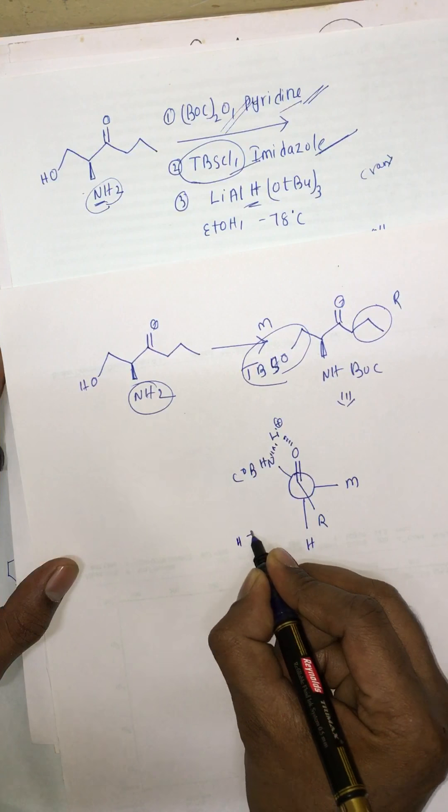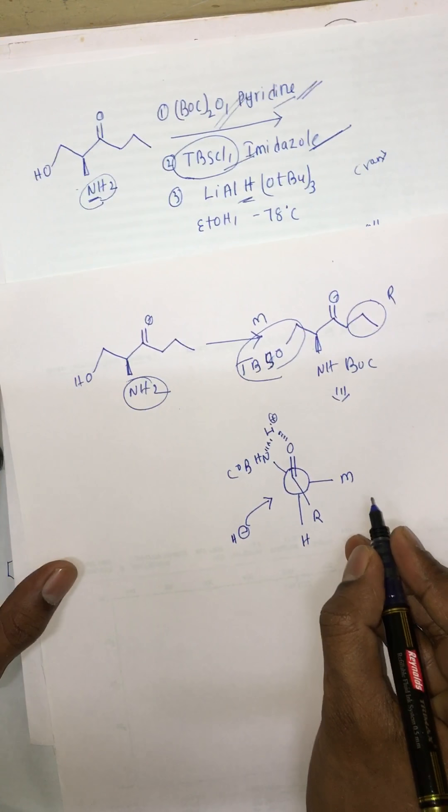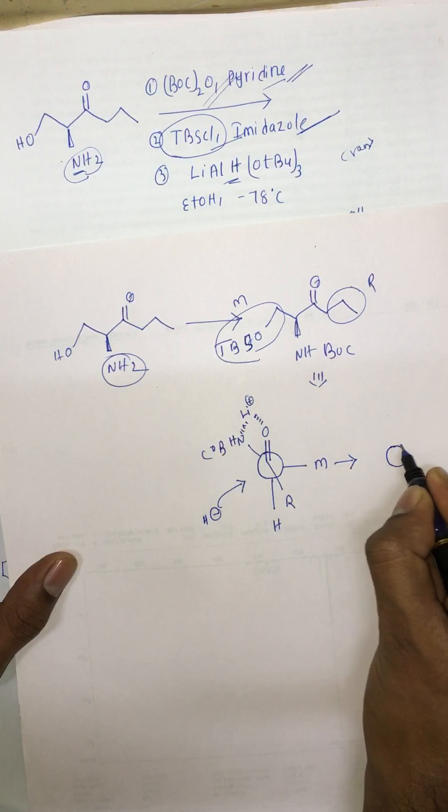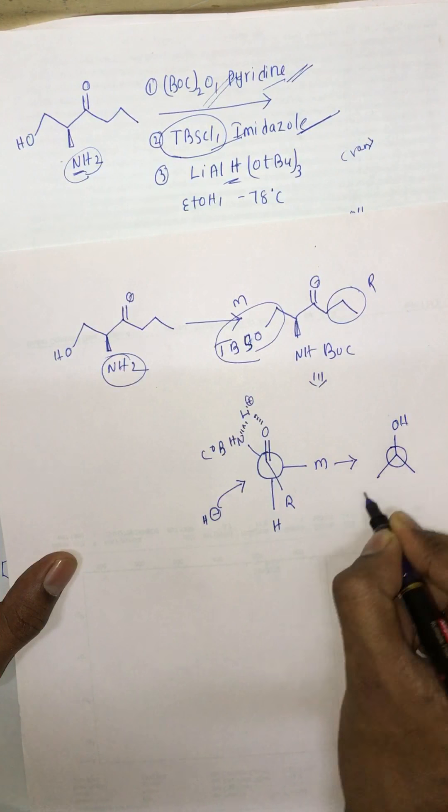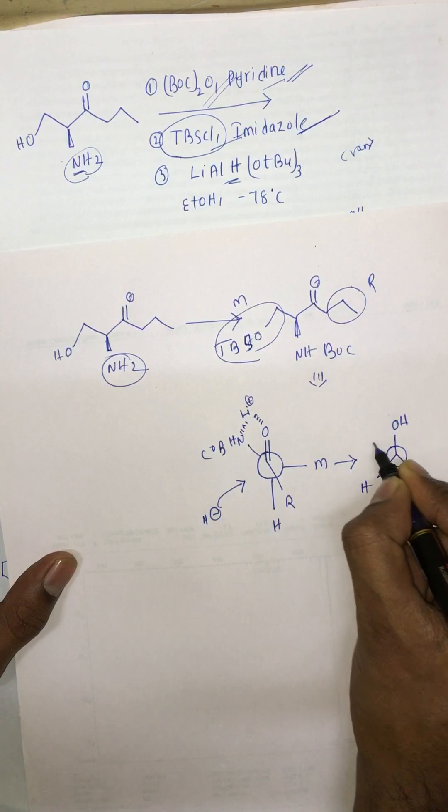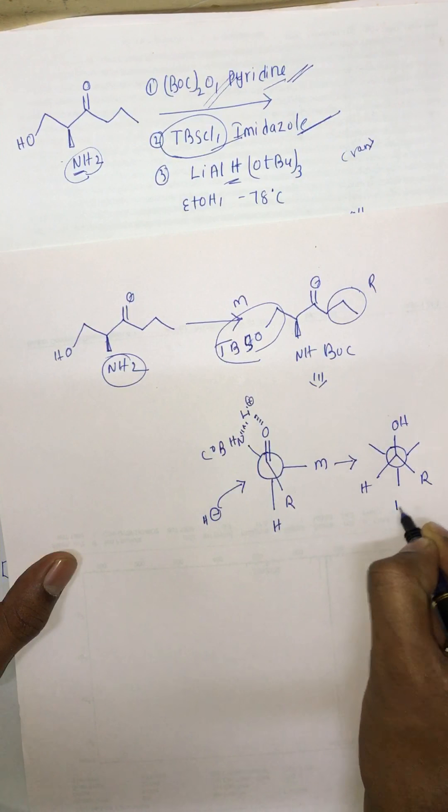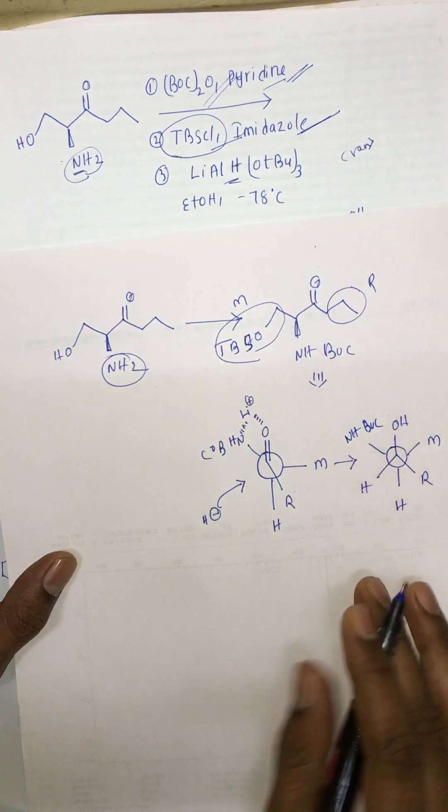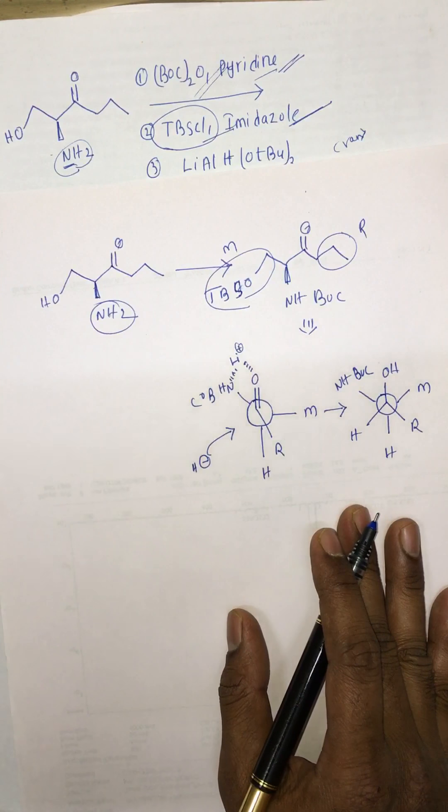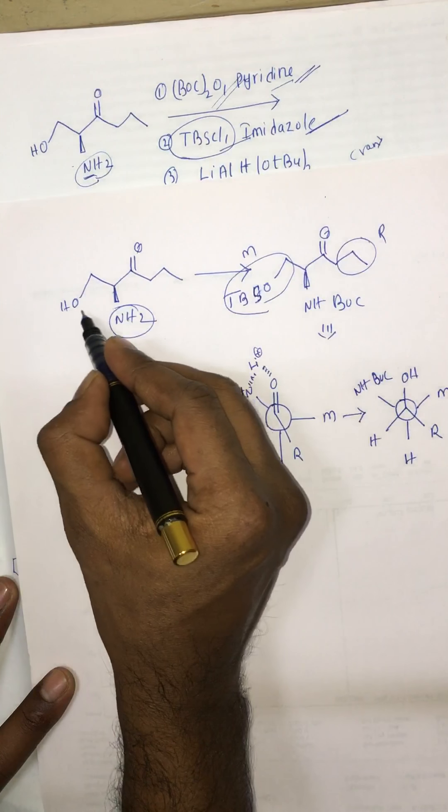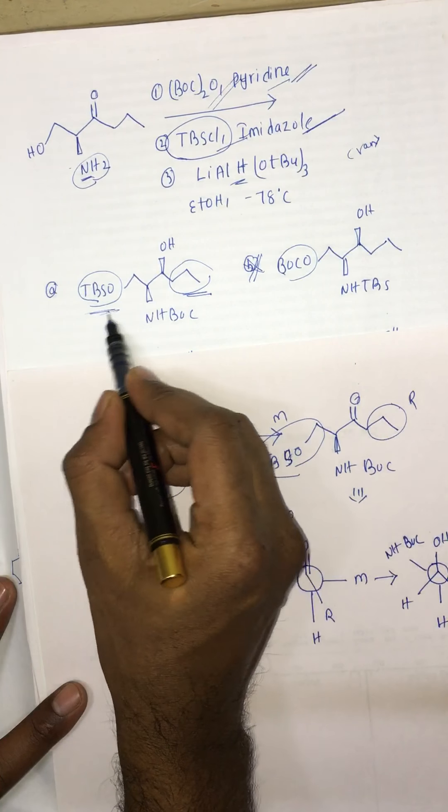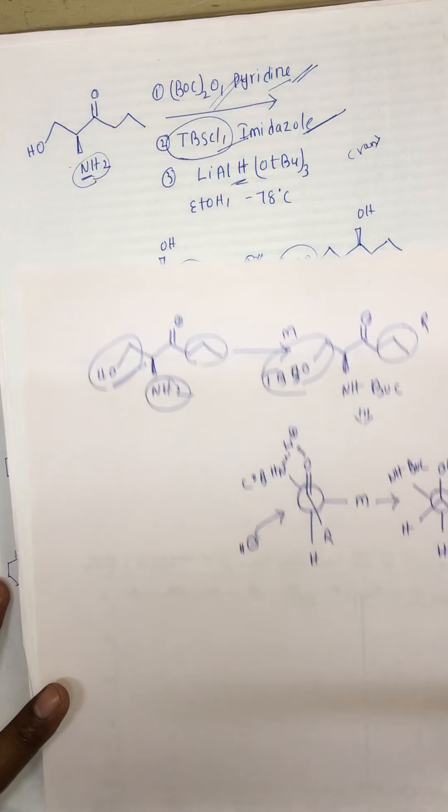Now hydrogen approaches from this side, so you get OH, HR, HM, and NHBOC - this is the final product. But if you see in the reaction, these groups are taken on the plane. In the options also, these two groups are taken on the plane, but here these two groups are side by side.